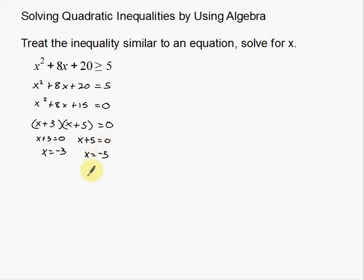With a normal quadratic equation we'd be done, but with an inequality we're looking for a range of solutions — a lot of numbers, not just one or two. So these values, negative 3 and negative 5, are not our solutions. They're important, but they're what we call critical points.